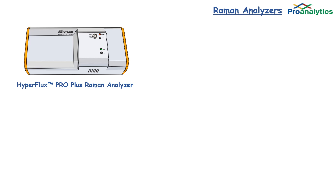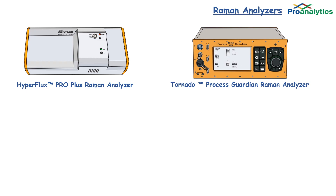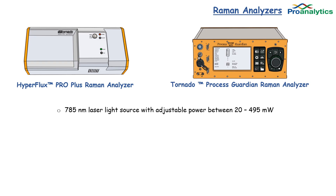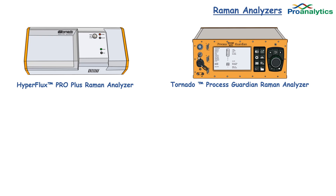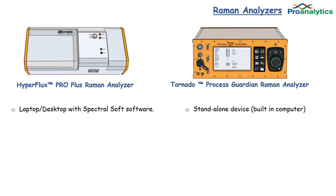Let's look at the Tornado equipment. The Tornado Hyperflux Pro Raman is on the left, and the Tornado Process Guardian is on the right. Both come with a 785 nanometer laser source that is adjustable between 20 and 495 megawatts. Each takes measurements under 30 seconds and comes with Tornado's HTVS technology. Both instruments will pair with either the direct immersion or non-contact Raman probes. The Hyperflux Pro is run through a laptop with Spectrosoft software, and the Process Guardian is a standalone unit.